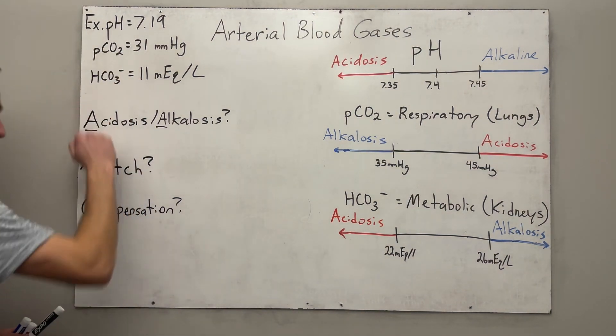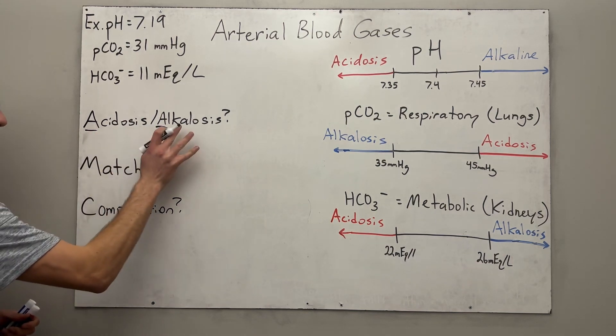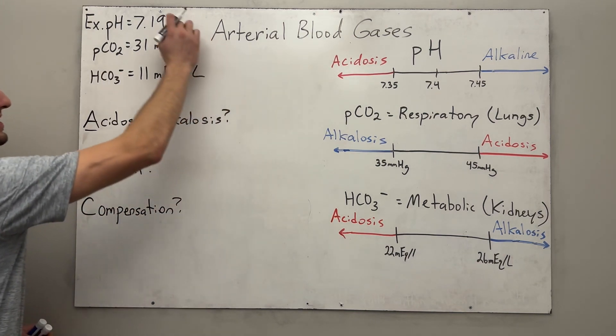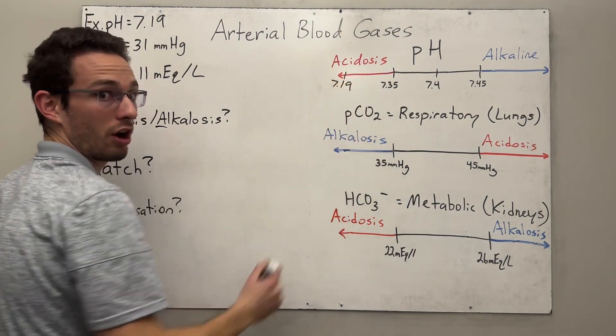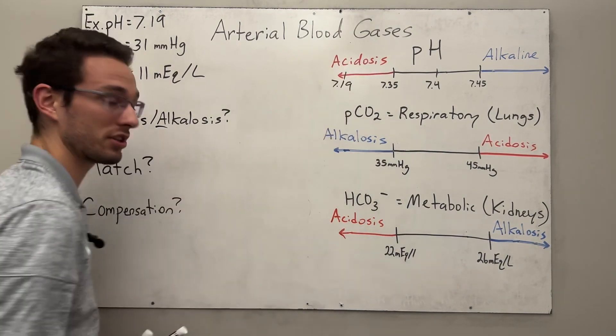So we've got pH 7.19, carbon dioxide 31, bicarb 11. So looking first at our AMC method, we're looking acidotic or alkalotic. We do that by looking at pH and we see that the pH is very, very low at 7.19. That is incredibly low. So we know that it is acidosis.